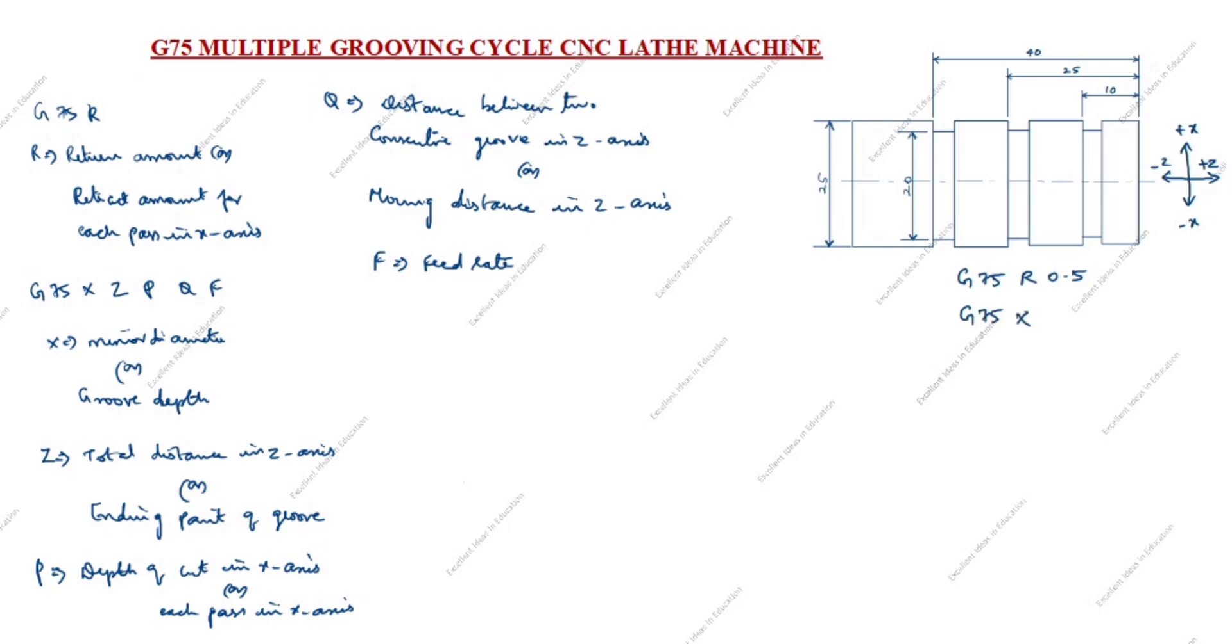What is X? X is minor diameter. Minor diameter, you see this is the diameter. So I will write this is diameter 20. So minor is X20. X is minus or plus, you see this side is plus, so X is plus 20.